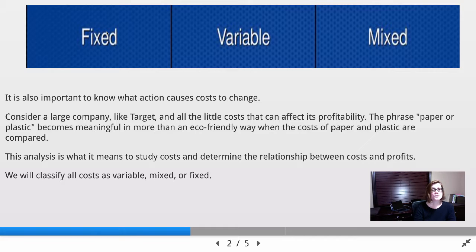A fixed cost would be something like a production supervisor's salary, whereas a variable cost might be, if we're making sandwiches, the bread, the deli meat, and the mayonnaise. Mixed costs have a component of each, a component that's fixed and a component that's variable.